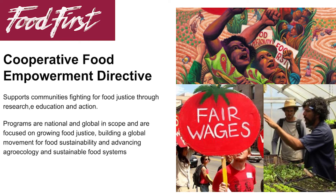There's also the Cooperative Food Empowerment Directive, also called Food First, which supports communities fighting for food justice through research, education, and action. These programs are national and global in scope — you'll see their work not just in the United States but also around the world. It's all about cultivating food justice and building a global movement for sustainable food systems. They promote agroecology, which is a way of creating farms that are similar to natural ecosystems and use fewer pesticides and fertilizers because they have a robust system that supports the agriculture.